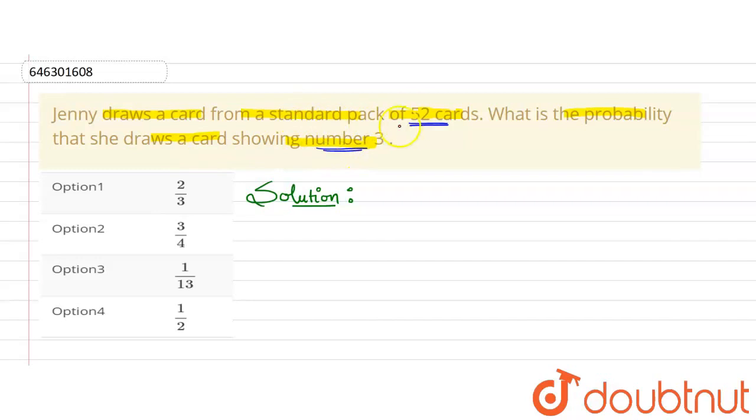The card drawn is a number 3. We know that there are 4 types of cards in a deck. What are those 4 types of cards? Diamond, Heart, Spade and Club. These are 4 types of cards.